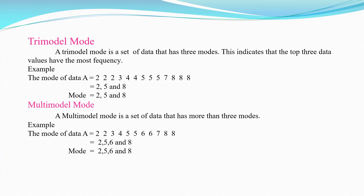A tri-modal mode is a set of data that has three modes. This indicates that the top three data values have the most frequency. Example: the mode of data A = {2, 2, 2, 3, 4, 4, 5, 5, 5, 7, 8, 8, 8}. The repeated values are 2, 5, and 8, so the mode is 2, 5, and 8.